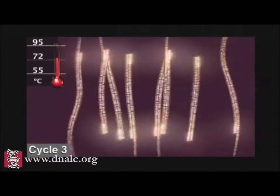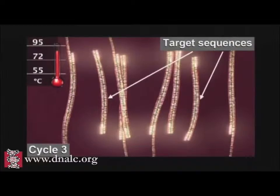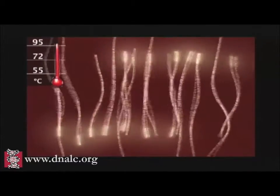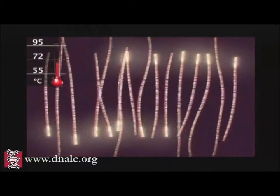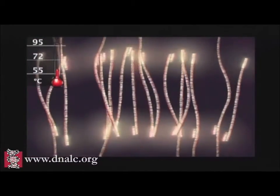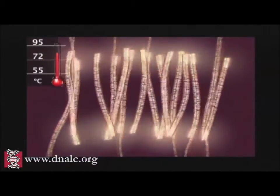After three cycles, the target sequence defined by the primers begins to accumulate. After 30 cycles, as many as a billion copies of the target sequence are produced from a single starting molecule.